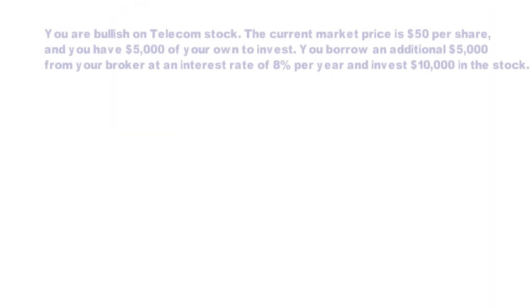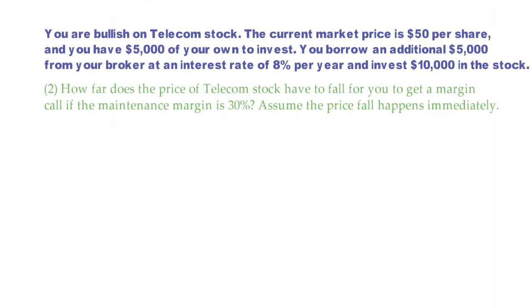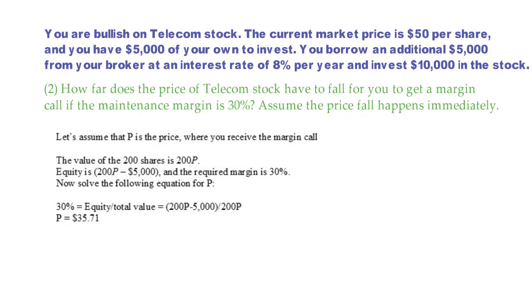Question number two: How far does the price of telecom stock have to fall for you to get a margin call if the maintenance margin requirement is 30%? Assume that the price fall happens immediately. Let's assume that P is the price where you receive the margin call. The value of the stock, 200 shares, is 200 times P. Equity in the account is 200P minus $5,000. Maintenance margin is 30%. We can form an equation and solve for P, which is 30% equals equity divided by total account value. So, 200P minus $5,000 divided by 200P equals 30%. If you solve for P, you get P equals $35.71.